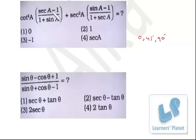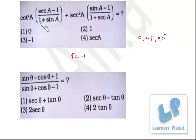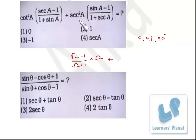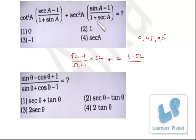So cot²a = cot²(45°) = 1. Sec 45° — since cos 45° = 1/√2, sec 45° = √2. So that part is √2 minus 1. Then 1 plus 1/√2: taking LCM gives (√2 + 1)/√2. Then sec²(45°) = 2. And sin(45°) = 1/√2, so one part evaluates to (1 − √2)/(1 + √2).